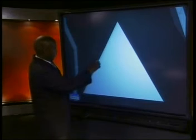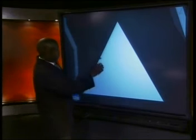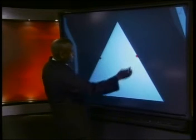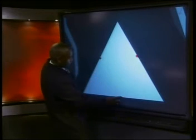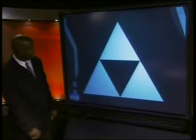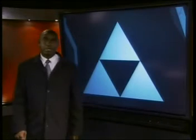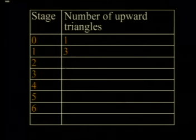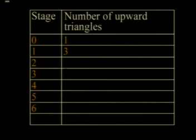For our next stage, let's join the midpoints of each side of the big triangle — that's one, two, and three. Now there are three triangles pointing up. As you can see on our table, at stage 1, we have three triangles.